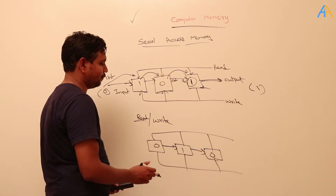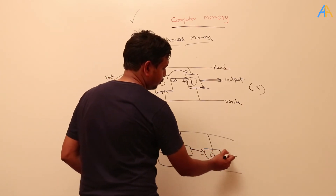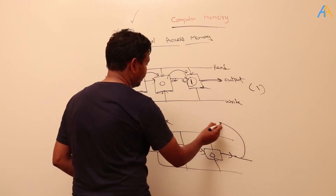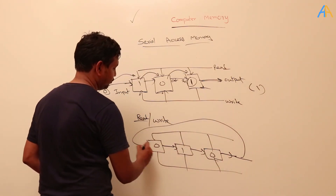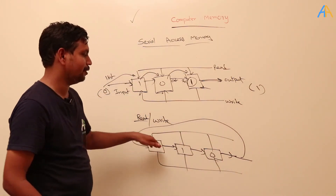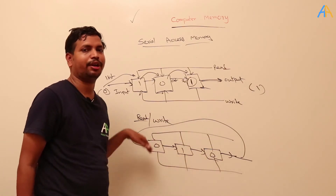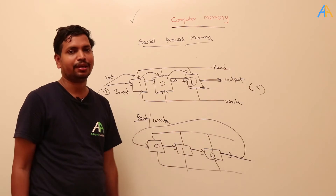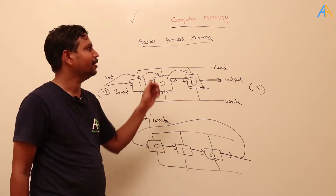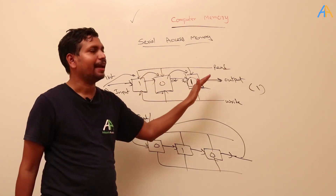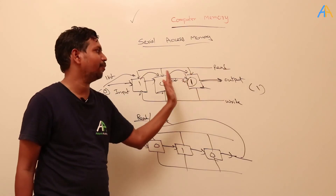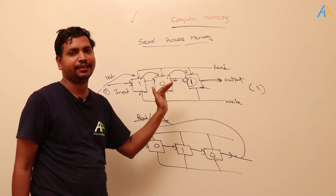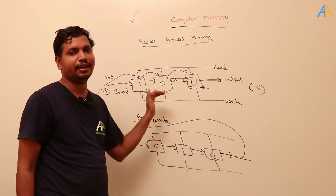One more type: if the output we are finally reading is taken back and connected to the input, then these numbers will keep on rotating. This is called circular memory or circular shift register. This is one type of serial access memory, because we are accessing only one bit serially, one after another — first this one, then the next — serially we are accessing. This is serial access memory.